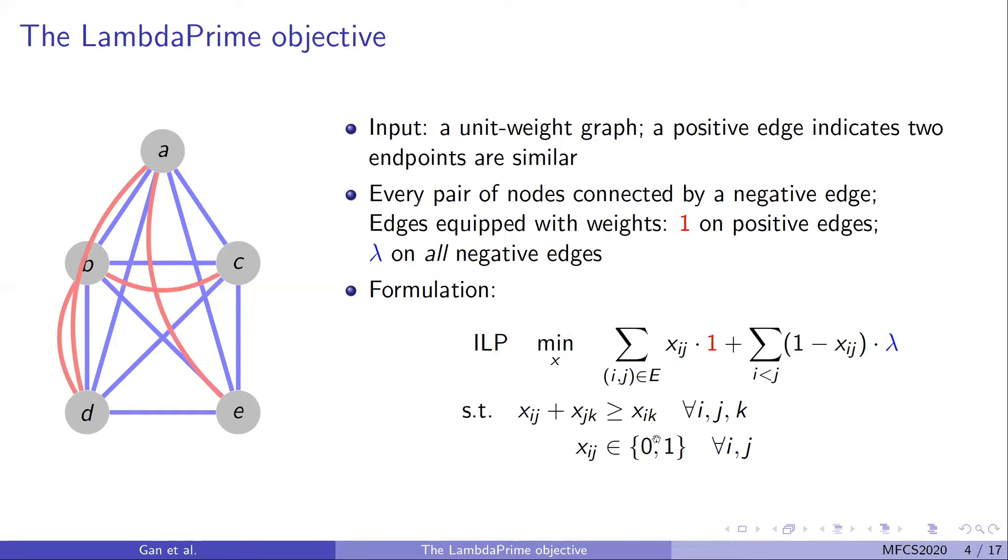The formulation can be seen as a generalization of correlation clustering. The integer programming problem is defined over a variable X, and X_ij is a cut variable. When X_ij equals 1, we want i and j to be separated in the clustering. If X_ij equals 0, we want to put them together into one cluster. The triangle inequality guarantees that from the assignment of X_ij, we can derive a feasible clustering. The objective sums over all mistakes made by the cut variable. Later on, we will encounter the linear relaxation of this formula, where X_ij takes real values from 0 to 1, and we call X_ij the LP distance.